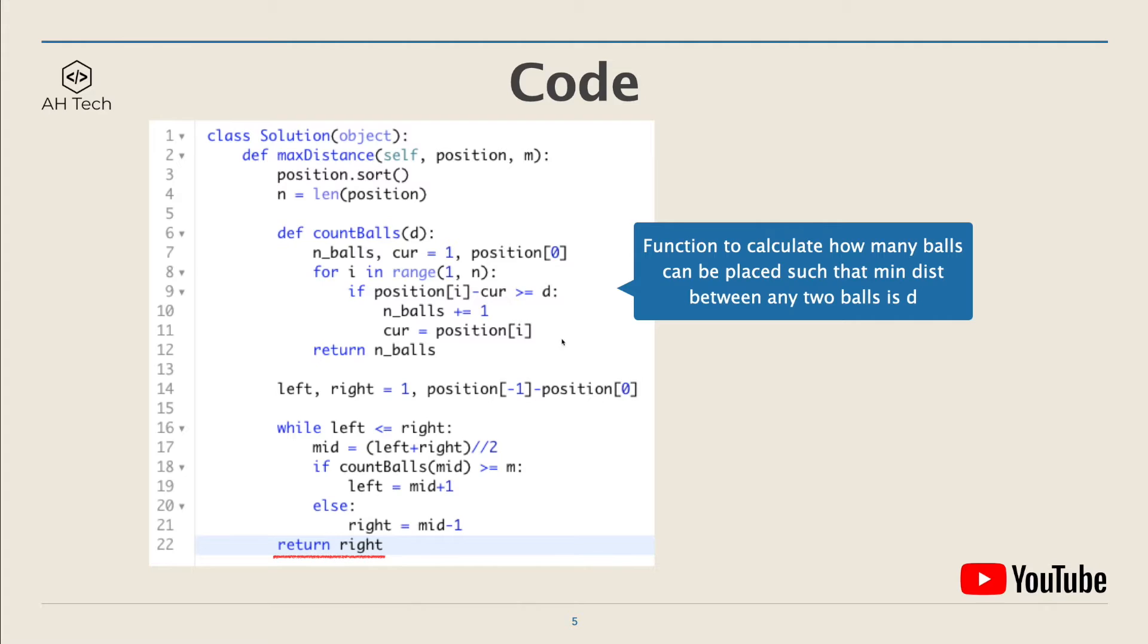The second part is to create the count balls function, which will calculate how many balls can be placed such that the minimum distance between two balls is the input d.